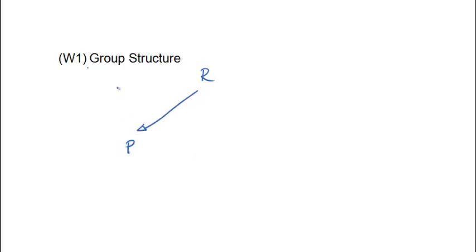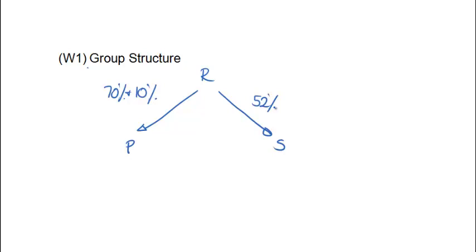Rose initially has 70% of Petal. It then buys a further 10%, but notice that further 10% purchase is on the last day of the year, which means we're not going to have to split out the profits 80/20 for any period of time. As far as STEM is concerned, the group owns 52% of STEM, so the NCI have the remainder, which is 48%. Our other workings are our standard workings: net assets, goodwill, NCI, and reserves.